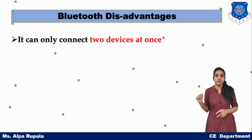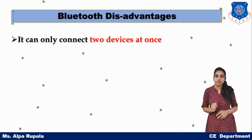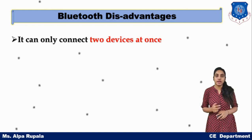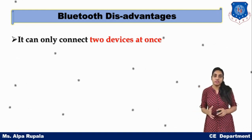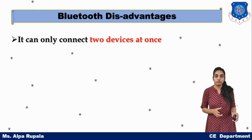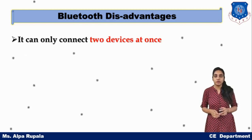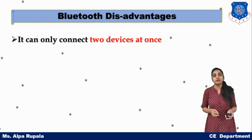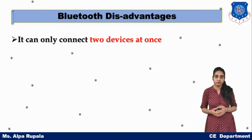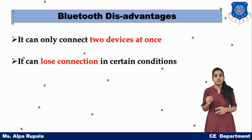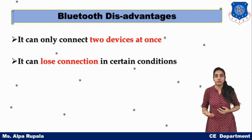Another disadvantage is that Bluetooth can connect only certain devices at once — for example, you can connect two mobile phones, but you cannot connect a third mobile phone to the same device. However, you can connect a Bluetooth headset alongside a mobile phone since those are different device types. Finally, Bluetooth can lose connection under certain conditions.